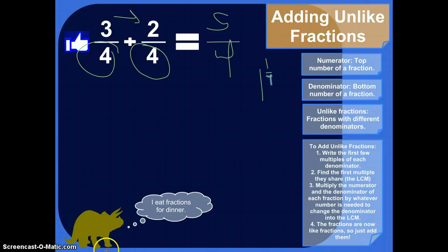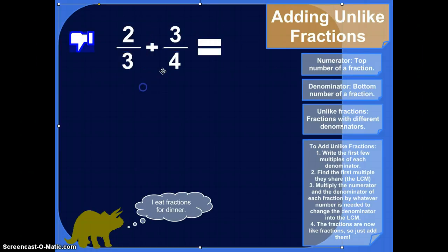So let me pause this and bring in some unlike fractions. All right. So what if you had something like that? We've got two fractions here with different denominators. So the denominator of this one of two-thirds is three, and the denominator of this one, three-fourths, is four. So these are unlike fractions because they have different denominators.